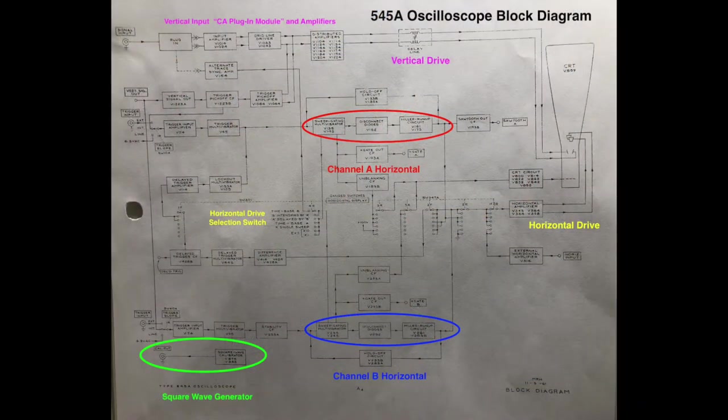Using the block diagram of the 545A oscilloscope, I'm going to look at the parts that are working. The square wave generator is working, shown in green. The horizontal drive circuit and selection switch are working. In blue, channel B horizontal sweep circuitry is working. In red, channel A horizontal sweep is not working, and vertical drive is not working. So we're going to use the channel B horizontal circuitry to take measurements and compare them with what we're seeing in channel A horizontal.